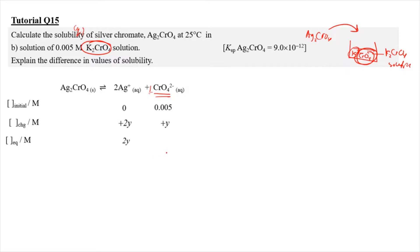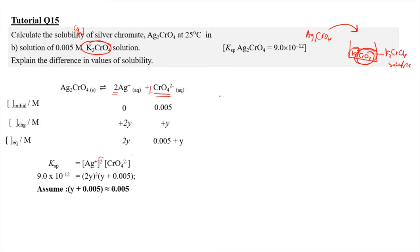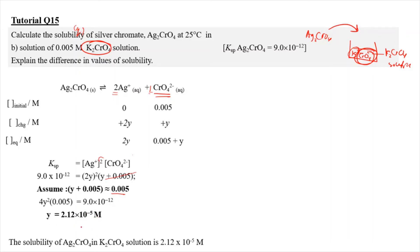At equilibrium, [Ag⁺] = 2Y and [CrO₄²⁻] = 0.05 + Y. The Ksp expression is Ksp = (2Y)² × (0.05 + Y). Since Ksp is very small, we assume Y + 0.05 ≈ 0.05. Expanding: Ksp = 4Y² × 0.05. Dividing by 4 and by 0.05, then taking the square root gives Y = 2.12×10⁻⁵ mol/L. The solubility of Ag₂CrO₄ in the dipotassium chromate solution is 2.12×10⁻⁵ M.